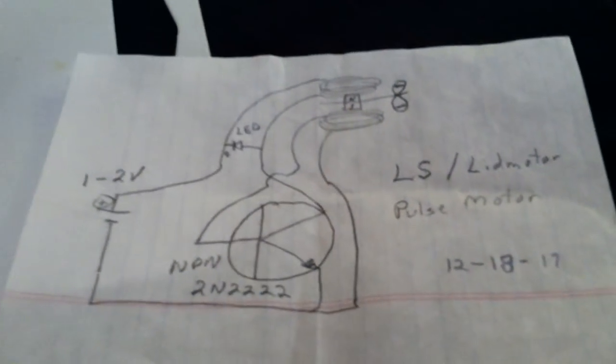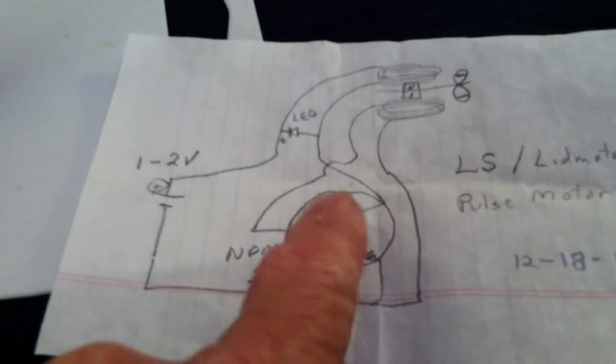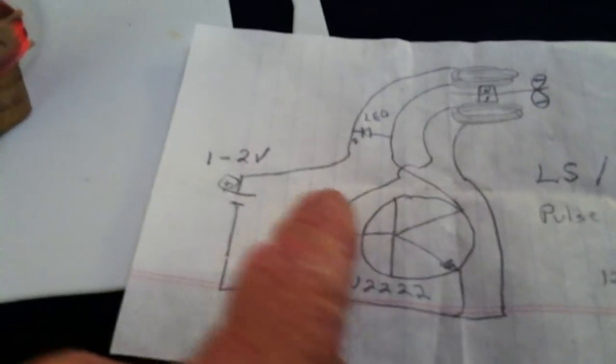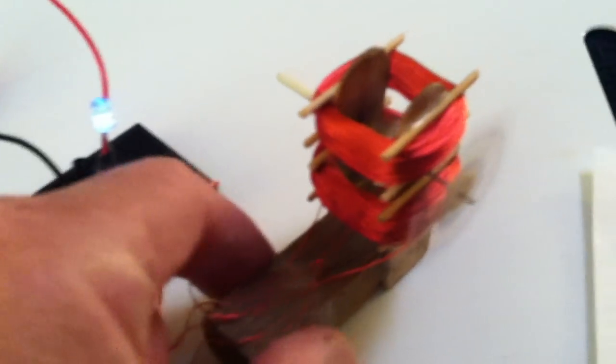There's not much to that little circuit. This basically replaces a reed switch, only it's just the transistor. But there's no resistor, no capacitor, no nothing. Just one little component, and you make a little motor out of it.